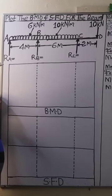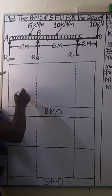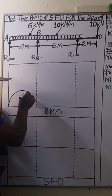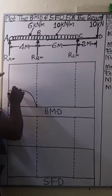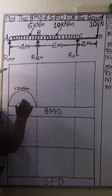So for the span AB, we have 12 kilonewton meter. So 12 kilonewton meter is at that point. So that's going to be a smooth curve, since when we have a UDL, the bending moment diagram is usually a smooth curve.